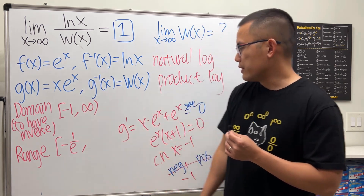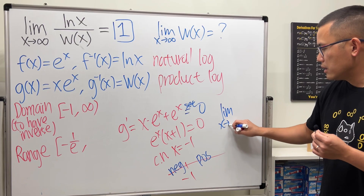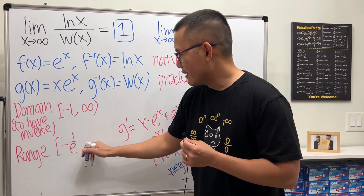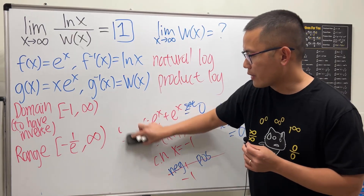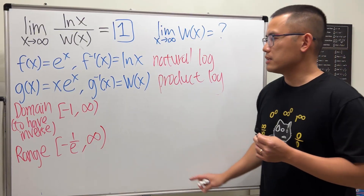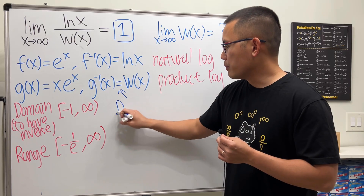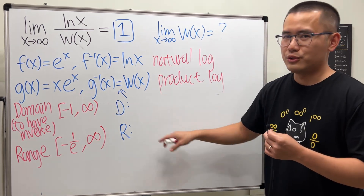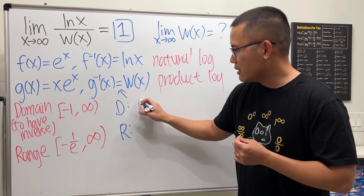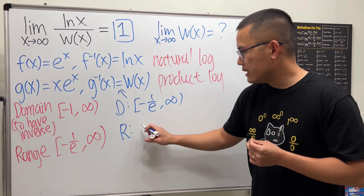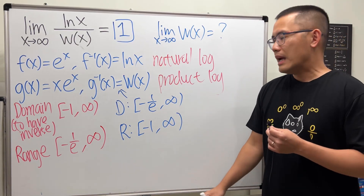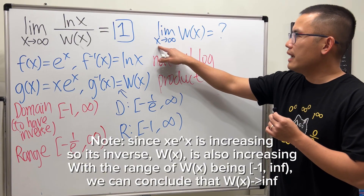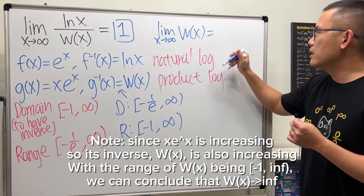The range of x·eˣ on this domain: plugging x = -1 gives the minimum value of -1/e, and as x goes to infinity, x·eˣ clearly goes to infinity. So the range is [-1/e, ∞). For the Lambert W function, domain and range swap: domain is [-1/e, ∞) and range is [-1, ∞). Since the range goes to infinity, the limit as x approaches infinity of W(x) is infinity.